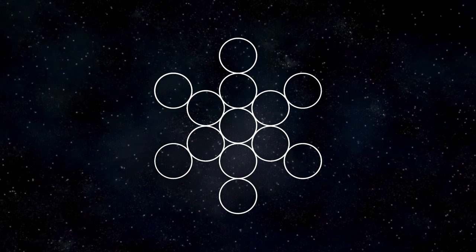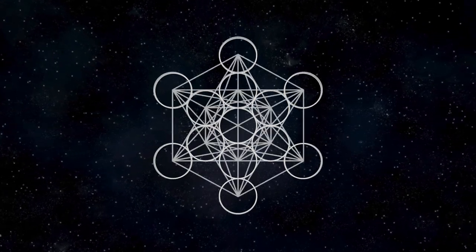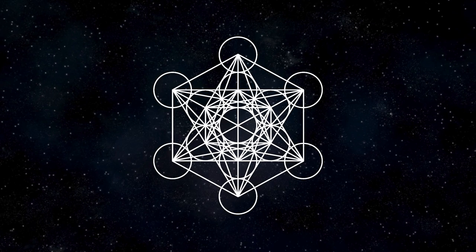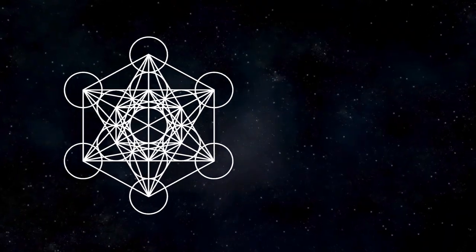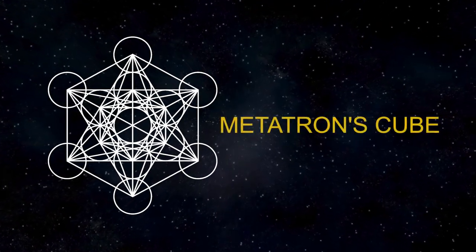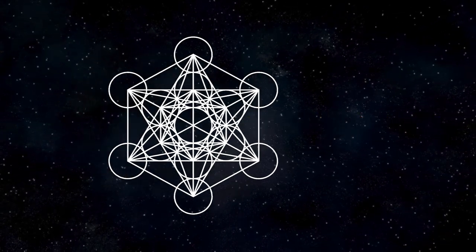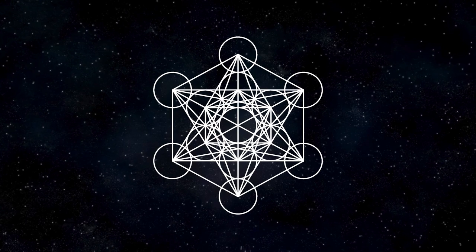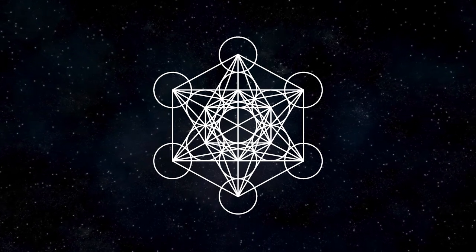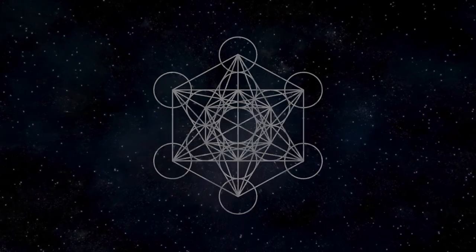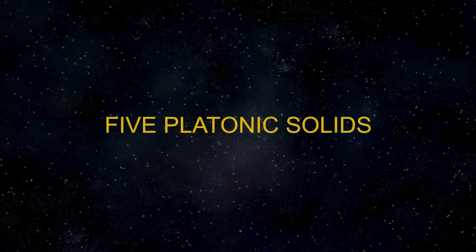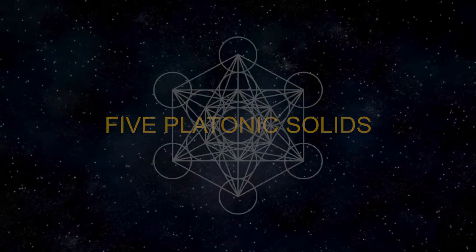When the feminine pattern of the Fruit of Life is combined with masculine straight lines, the result is the formation of Metatron's cube. This combination exemplifies the balance and integration of masculine and feminine aspects within sacred geometry. In Metatron's cube, you can find the five platonic solids, considered the building blocks of the universe.